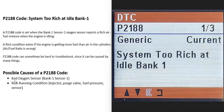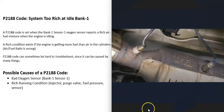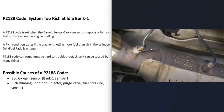Today I'm talking about a P2188 code — what it is and how you could go about fixing it. The P2188 code stands for System Too Rich at Idle, Bank 1. There are O2 sensors located on the exhaust, and they monitor the catalytic converter and how much oxygen was burnt off during combustion. The computer uses this information to adjust the air-fuel ratio mixture going into the cylinders. When you get this P2188 code, the Bank 1 Sensor 1 O2 sensor is reporting that the air-fuel ratio mixture is off — the engine is running rich.